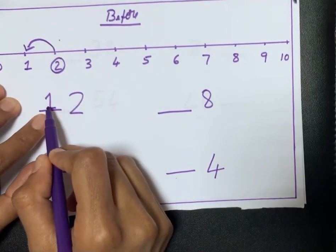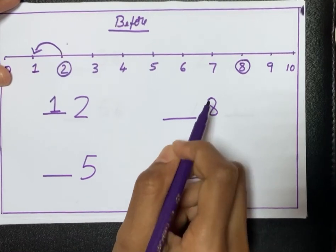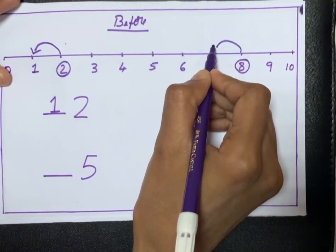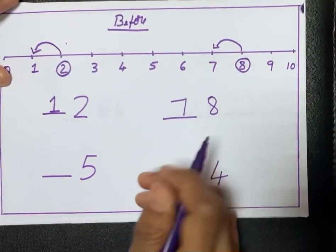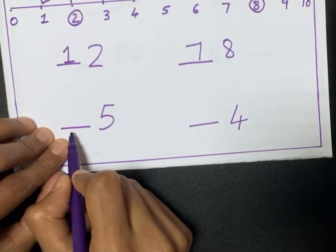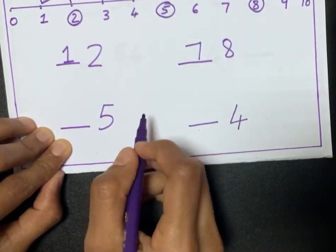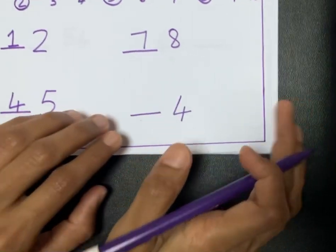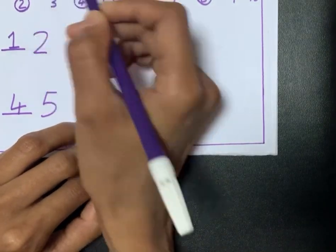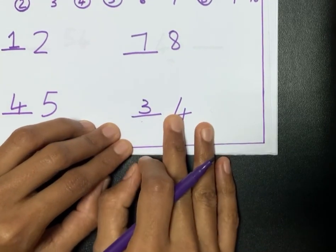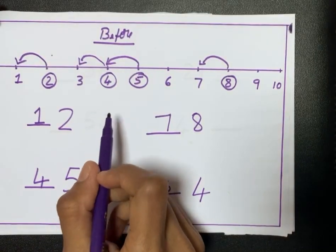For example: 2 with a dash on the left — the number before 2 is 1. Next, 8 with a dash on the left: jump one number to the left, the number is 7, so the before number of 8 is 7. Next, 5 with a dash on the left: jump one to the left, that means 4. Next, 4 with a dash on the left: jump one to the left, that means 3. Like this, you can teach before numbers.